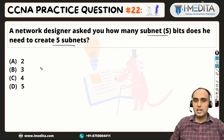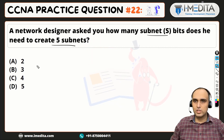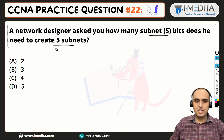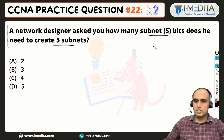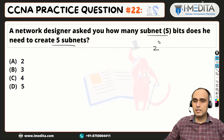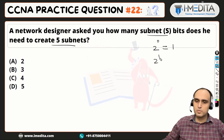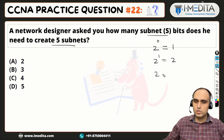So what do we need to see here? We need to look at powers of 2, because we need to create 5 subnets — going by the same logic we've already seen in the previous questions. 2 raised to the power of 0 is 1, 2 raised to the power of 1 is 2, 2 raised to the power of 2...